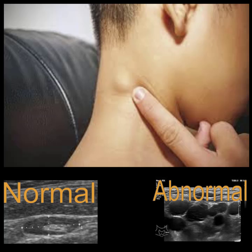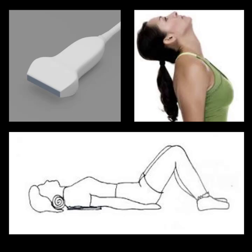Soft tissue neck ultrasounds are also ordered to evaluate for palpable masses that often correlate with enlarged submandibular glands or lymph nodes. Normal cervical lymph nodes measure less than 1 cm in AP or transverse measurements. Recent illnesses can cause lymph nodes to become reactive and enlarged, but they still keep their normal appearance and blood flow. Glands may appear edematous and have some extra vascularity.